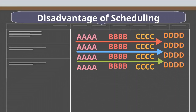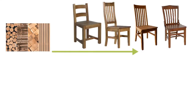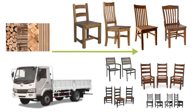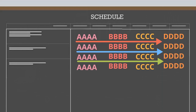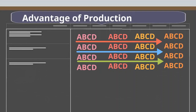When the production is scheduled like this, the raw material and finished goods stocks will have to be very high, as the customer will not lift the goods in exactly the same quantity. Production has to be scheduled in small lots, or preferably one piece at a time, as required by the customer. Let us look at the advantages of levelling the production.